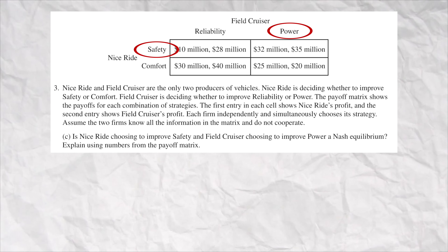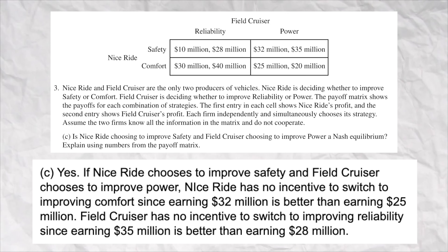In part C, they ask you if this is a Nash equilibrium, and the answer is yes. But again, you had to use numbers, not just words, to explain your answer. For Nice Ride, they're making $32 million, and if they decide to do comfort they'd only make $25 million — so they have no incentive to focus on comfort when they're focusing on safety. And for Field Cruiser, they're making $35 million and have no incentive to switch to reliability and only make $28 million. This is actually going to be a bear for the graders to grade, but as long as you explain using numbers, you're fine.